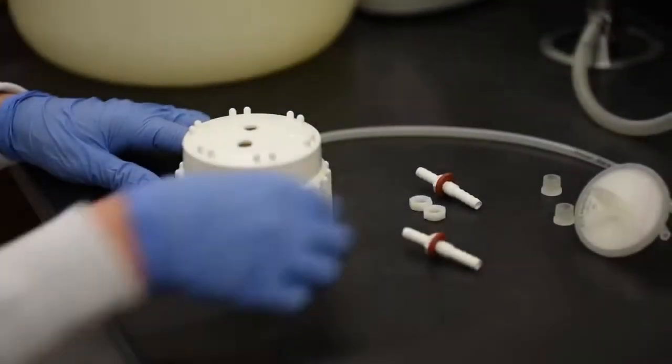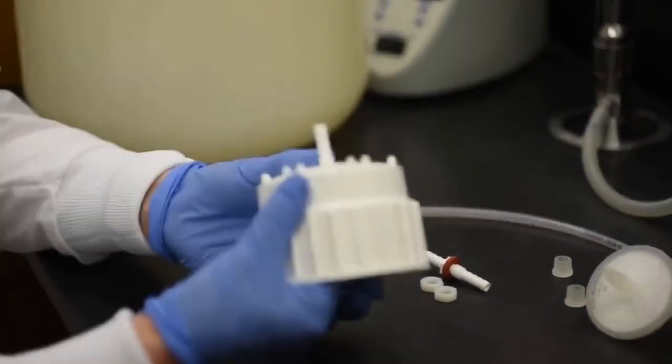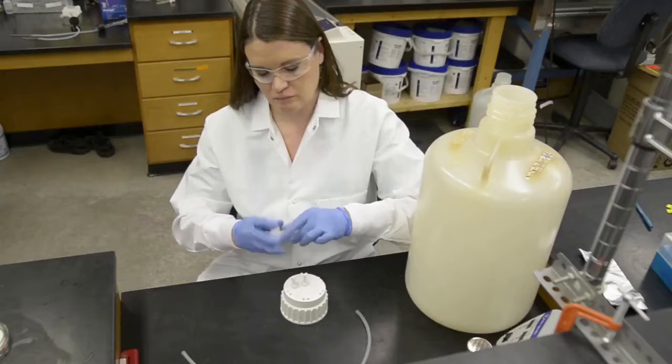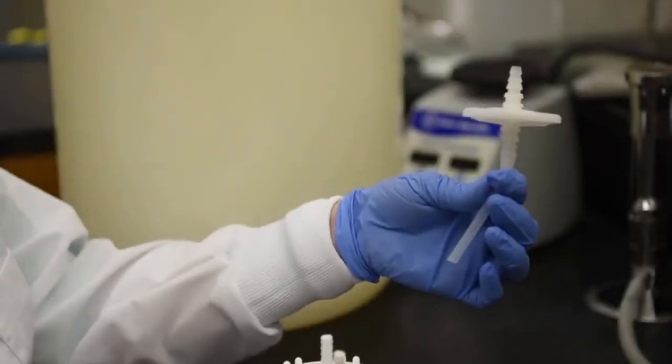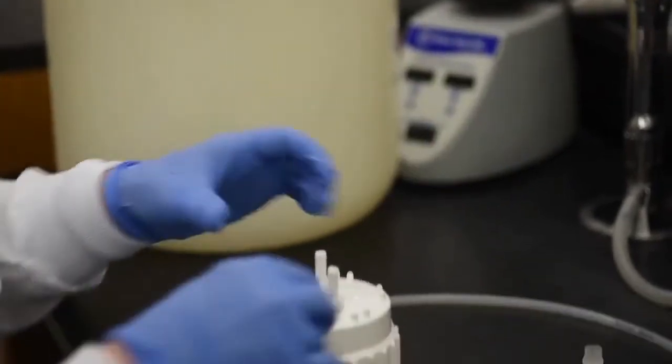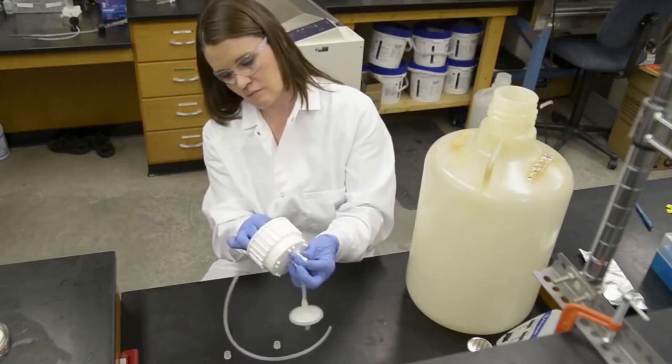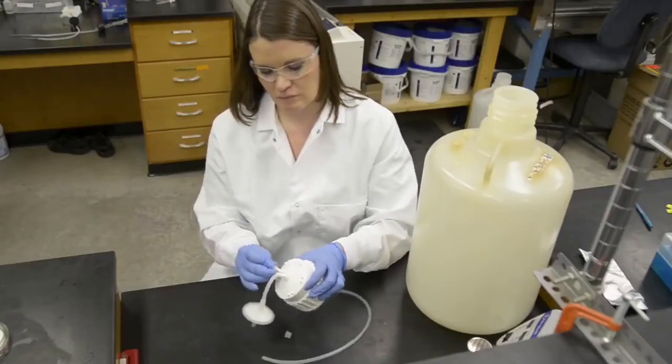Drill two holes into a 20 liter carboy lid using a one-quarter inch drill bit. Install a one-quarter inch barbed bulkhead fitting into each hole so that the nut is on top of the lid. Add a short length of size 16 silicone tubing and a bacterial air vent to the top of one fitting. Add a length of size 16 silicone tubing to the bottom of the other fitting so that the tubing extends to the bottom of the carboy. Add the bulkhead cap to this fitting.